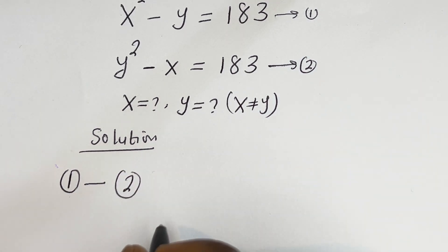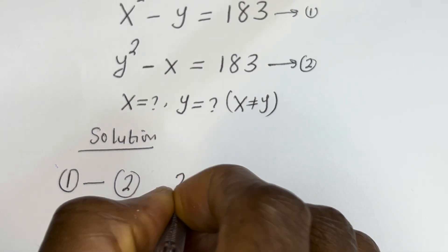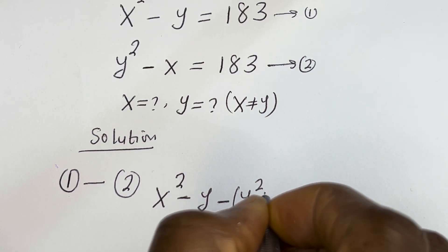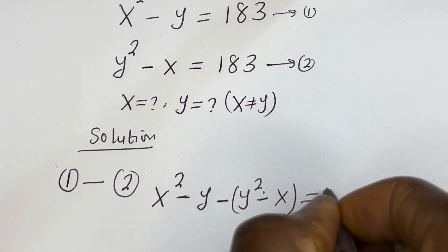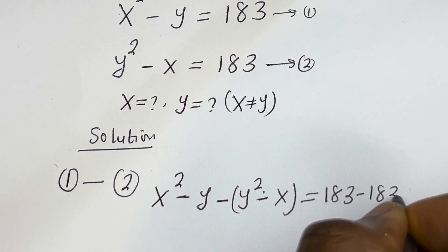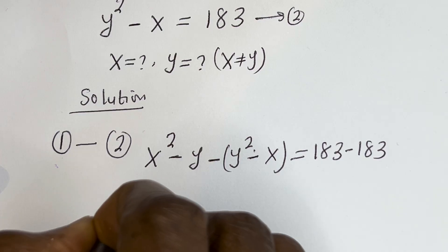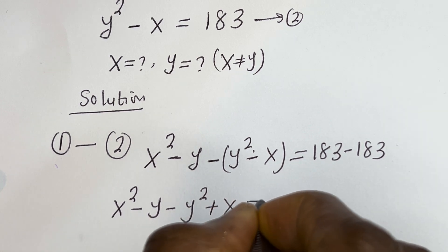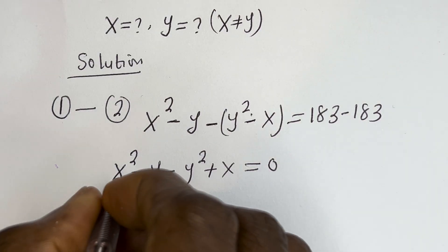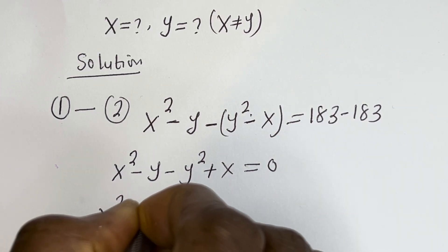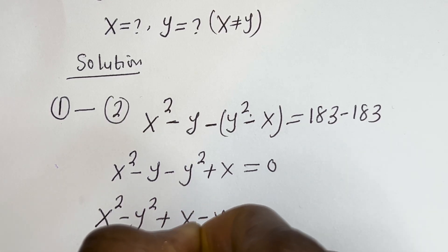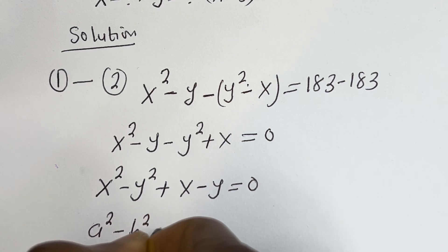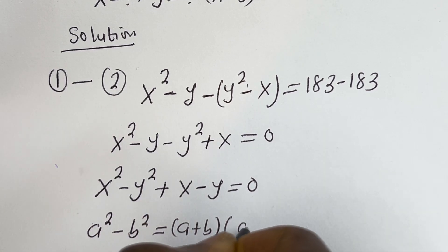That is: s squared minus y minus (y squared minus s) is equal to 183 minus 183. This gives us s squared minus y minus y squared plus s is equal to 0. Rearranging: s squared minus y squared plus s minus y is equal to 0. This uses the identity a squared minus b squared equals (a plus b)(a minus b).